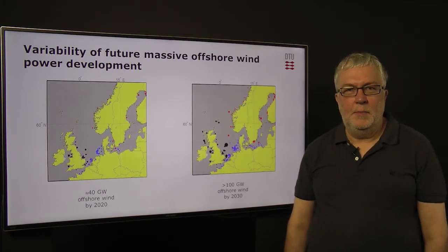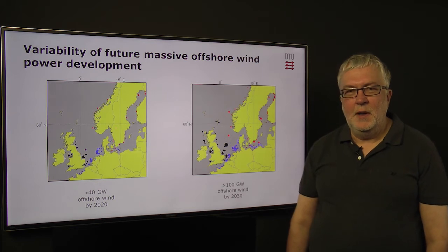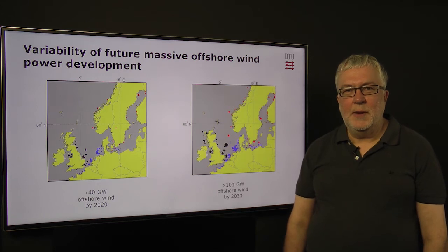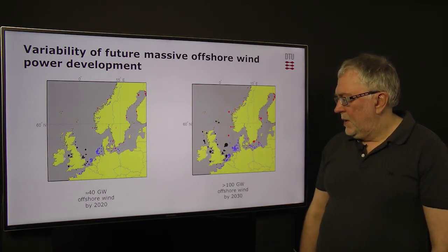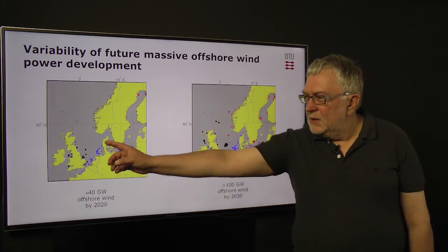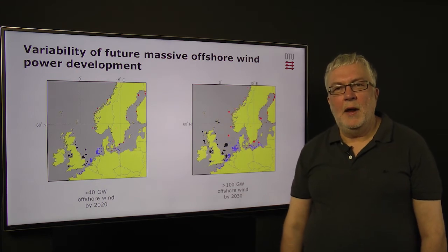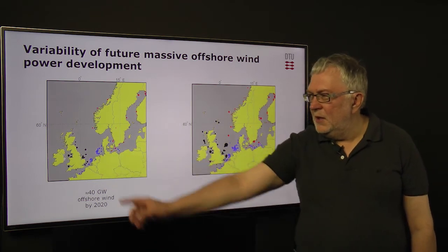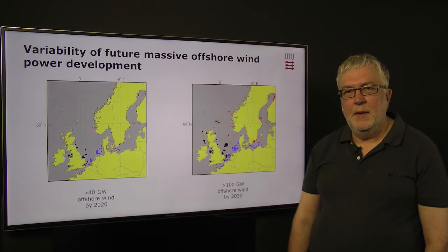Until today, most of the wind power has been installed onshore by far. But now the offshore development is going very fast, and it is going to increase to massive installation offshore in the not-so-far future. This is illustrated in the two maps we have here. To the left, we see the expected development of about 40 gigawatts offshore in North Europe by 2020. And to the right, we see about 100 gigawatts offshore by 2030. What we also see here is that the offshore wind power is very concentrated in relatively small areas. And this means, because the wind turbines will see similar wind speeds in these areas, the total summed power will fluctuate more than what we are used to see from onshore wind power.